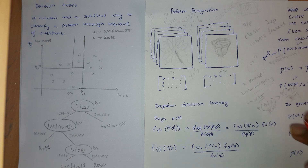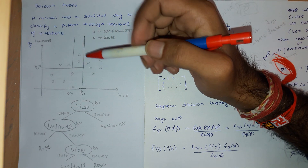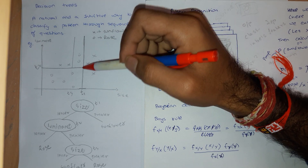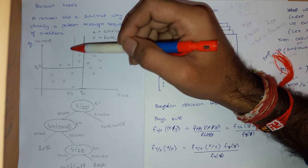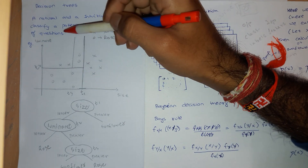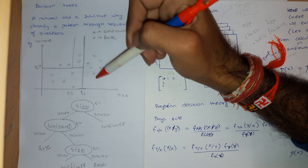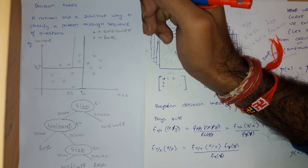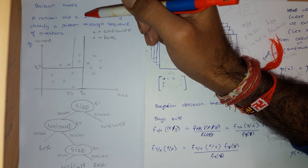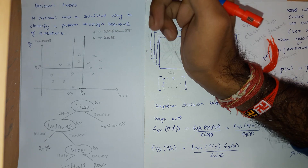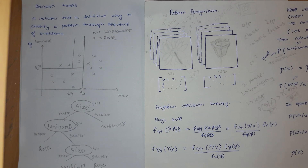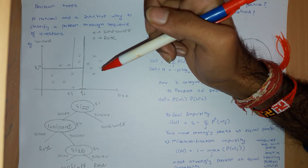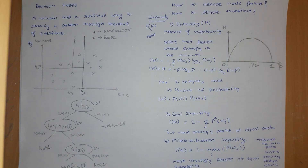So here you can see how easily I have classified two classes — sunflower and rose. This data was actually not linearly separable; you could not get one line which could separate both classes without error. So decision trees have the advantage that you can separate nonlinear data as well.